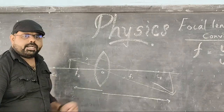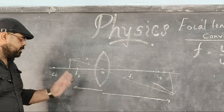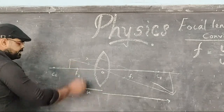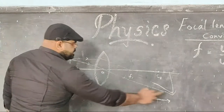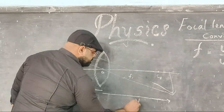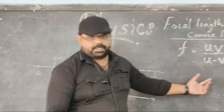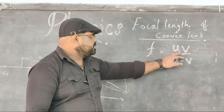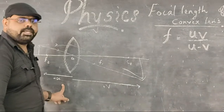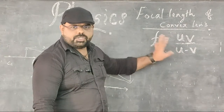You must use the sign convention when substituting the values of U and V into the equation. In the equation F = UV / (U − V), U is the object distance taken as negative and V is the image distance taken as positive. When you substitute: numerator is −U × V (negative), denominator is −U − V (also negative), so the two negatives cancel, giving a positive value for the focal length of the convex lens.